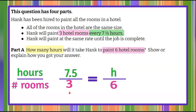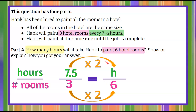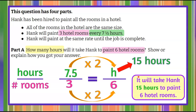Now we look at the relationship between what we know. We know both denominators: three going to six. Three times two is six, so the same relationship must exist in the numerator. Seven and a half times two gives us 15 hours. So it will take Hank 15 hours to paint six hotel rooms — seven and a half hours for three, fifteen hours for six.